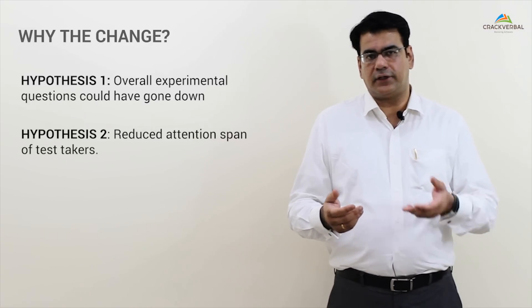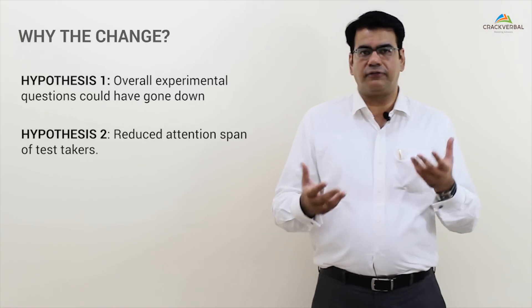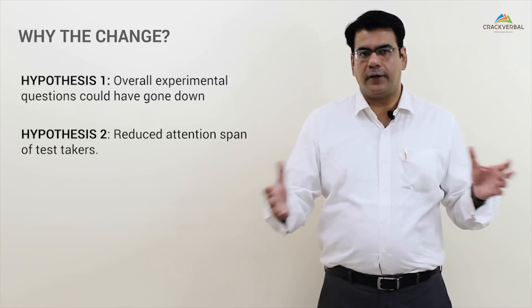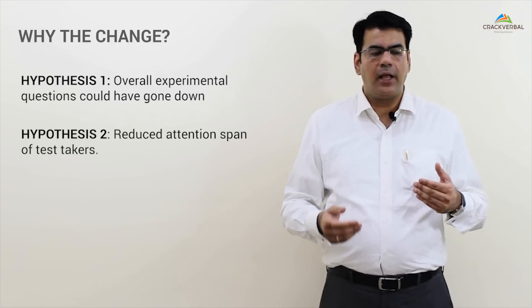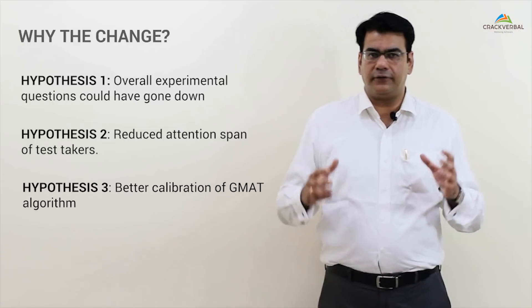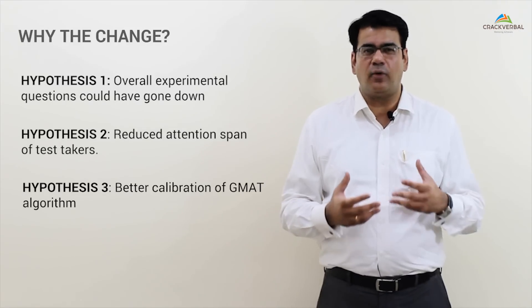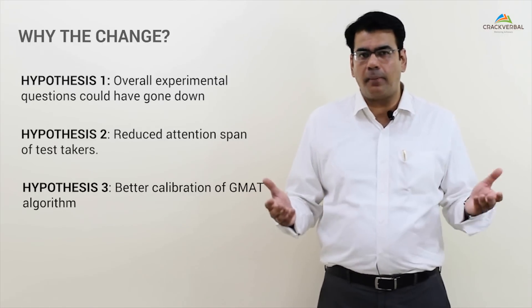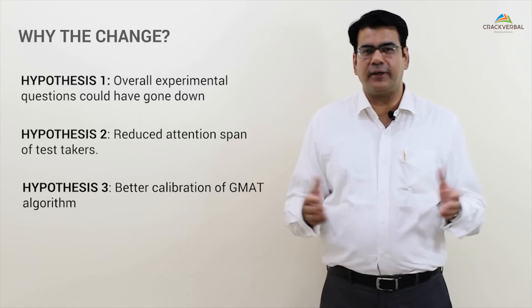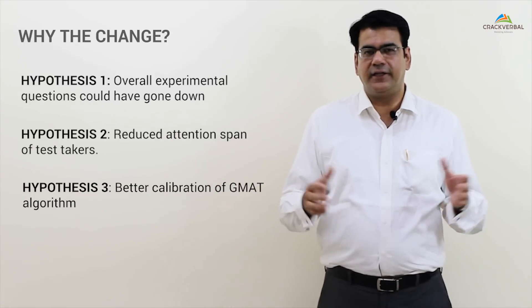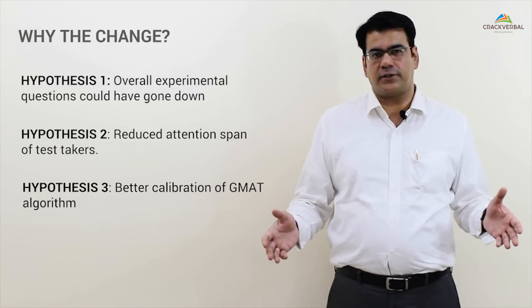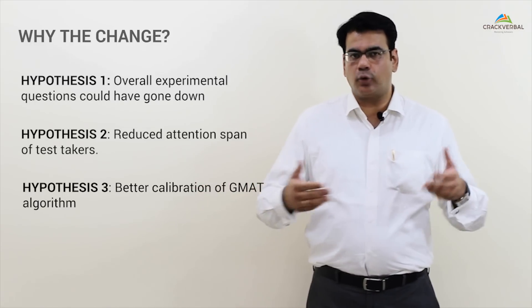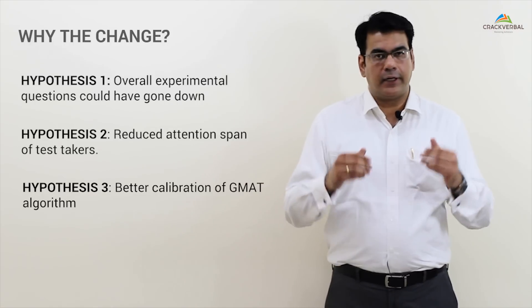Especially if you compare it to the GRE, where you have sections of 30 to 35 minutes—in terms of total time available, you're actually doing something similar to GRE. The third hypothesis is GMAT has been conducting the test for many years now. With so many retakers and data points, they probably don't need 78 questions to assess where you stand. They can do that with fewer questions. The calibration of the algorithm has gotten smarter, which could be another reason why GMAT is reducing the number of questions.